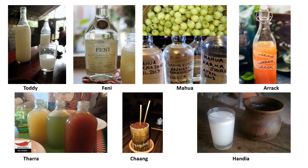These country-made liquors are often adulterated using various chemicals. For example, toddy is highly adulterated — it may be adulterated with chloral hydrate, diazepam, or alprazolam-type drugs and chemicals. This adulteration gives more yield of the country-made liquor which can then be sold at the same price.